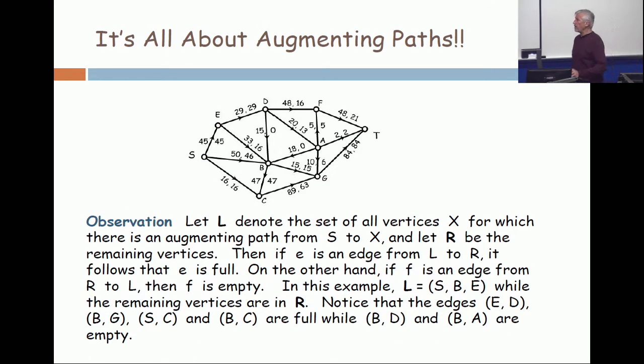And the emphasis will be that it's all about augmenting paths. All right. So, let's take an augmenting path discovered like this. We let L be the set of all vertices X, where X now is a capital letter only because I'm using capital letters to denote vertices. Let L be the set of all vertices capital X, for which there's an augmenting path from S to X.